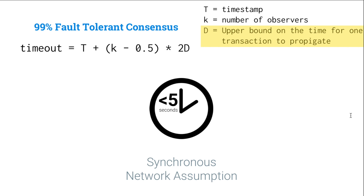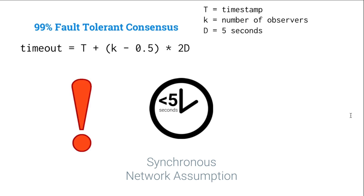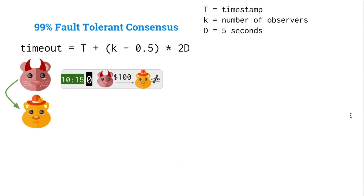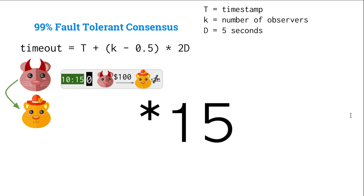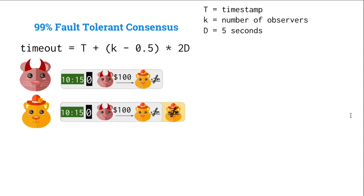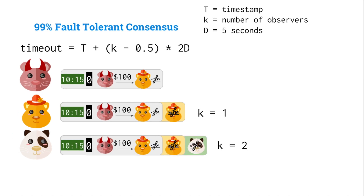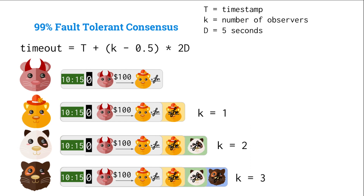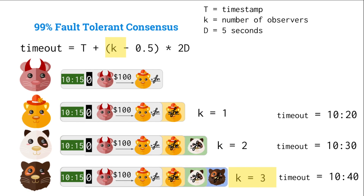This upper bound D is based on our synchrony assumption — note that this is a strong assumption, which we'll talk about in a moment. As for K: Mallory generates a transaction signed at 10:05, sending 100 to Alice. Alice signs that she observed that transaction, setting K equal to 1, and sends it to Jing. Jing signs it, setting K equal to 2, and sends it to Bob. Bob signs, setting K equal to 3. Plugging in the numbers: the timeout for K=1 is 10:20, for K=2 is 10:30, and for K=3 is 10:40.